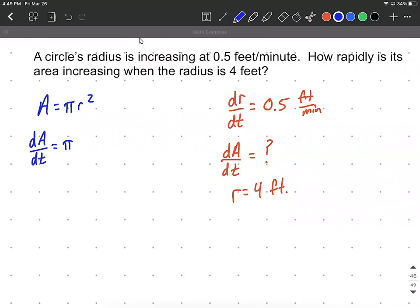Bringing along that constant, the derivative of r² is going to be 2r, just using the power rule there, but then we also need to include dr/dt because we just differentiated r with respect to time.